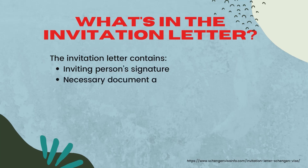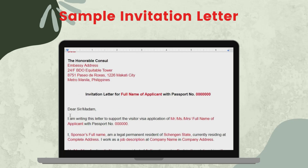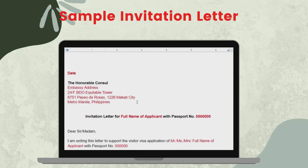The next part would be a sample invitation letter that I have used on my travel to Europe. This is a sample copy of the invitation letter for the Schengen visa application. First, indicate the date, salutations, and the address of the embassy wherever you are going to submit the application. And then the title: invitation letter for the full name of the applicant with passport number — indicate the passport number. And then the greetings. Your sponsor or the person who is inviting you will be the one to write this particular letter, or you might also want to do it yourself and ask him or her to sign it for you.